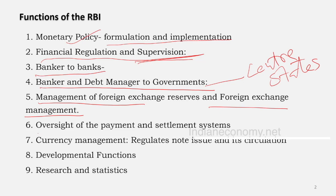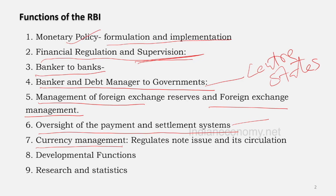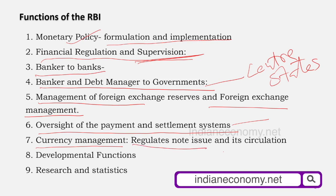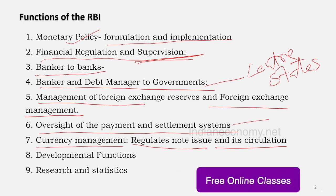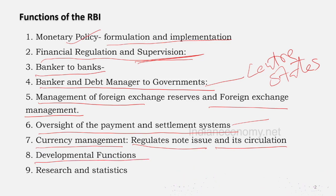The sixth function is oversight of the payment and settlement system, including RTGS and NEFT. The seventh function is currency management — this was the original function assigned to central banks when they were born around 350 years back. RBI issues currency and controls its circulation.